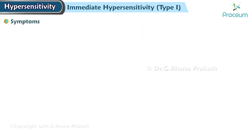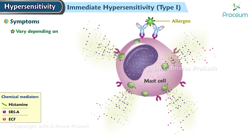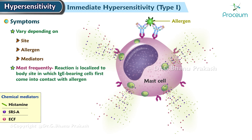Now for the symptoms of immediate hypersensitivity. Symptoms of immediate hypersensitivity vary depending on the site, the allergen, and the mediators involved. Most frequently, the reaction is localized to the body site in which the immunoglobulin-bearing cells first come into contact with the allergen.